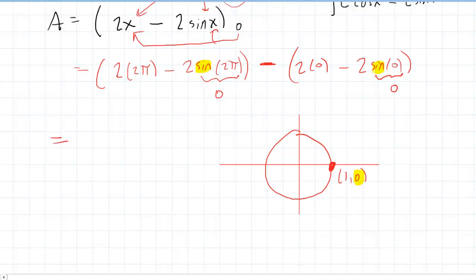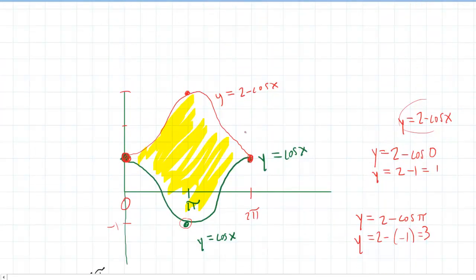So this cleans up rather nicely. We have 2 times 2π, which is 4π, minus 2 times 0. Minus 2 times 0 over here is 0. And then 2 times 0. There's a lot of 0s in here. This goes out. All that goes out. So we are left with the final answer of just 4π. Which represents the area between the red and green curves.